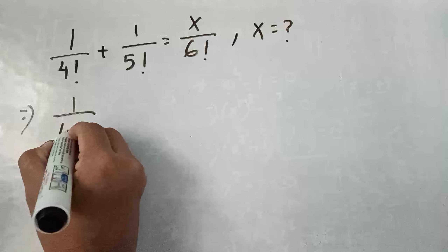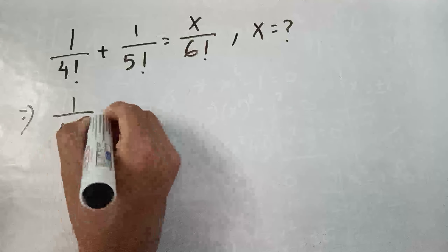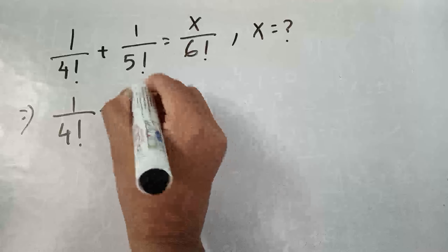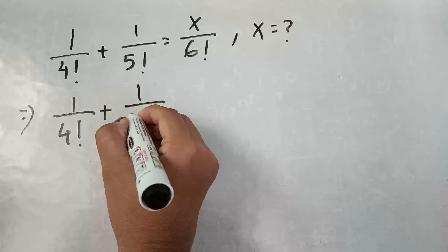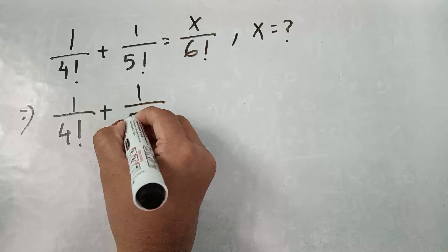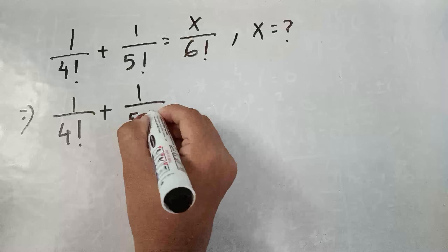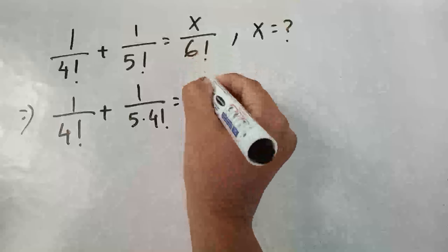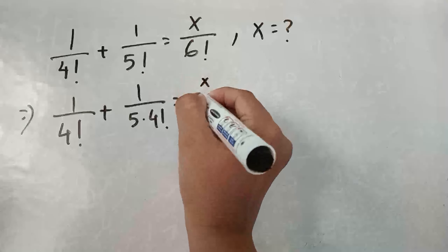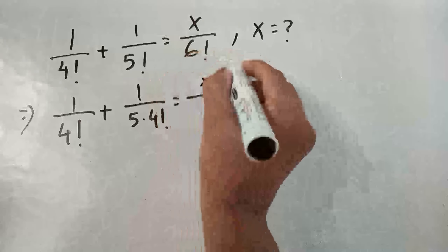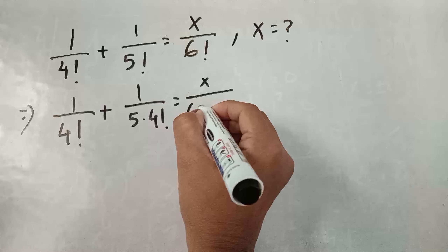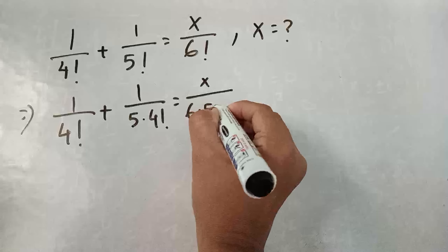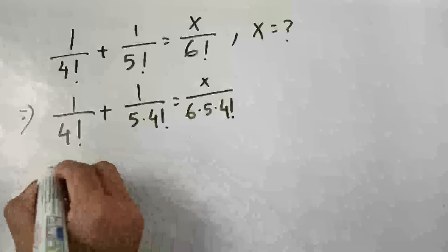This is 1 by 4 factorial and this is 1 by 5 factorial. We can write 5 factorial as 5 into 4 factorial, giving us x by 6 factorial. We can also write 6 factorial as 6 into 5 into 4 factorial.